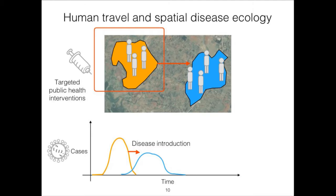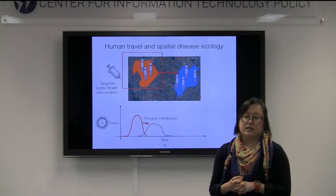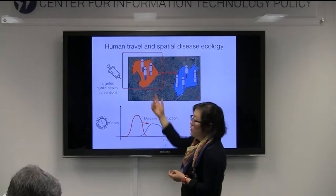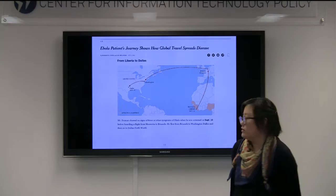This is particularly important if we're trying to think about public health interventions. Normally there's a very limited amount of time, money, and people to do any type of intervention. So if there's a way we can see how different dynamics in different places are coupled, perhaps instead of trying to vaccinate everyone in both locations, if we do it early enough, we might be able to only vaccinate the people in the orange location.